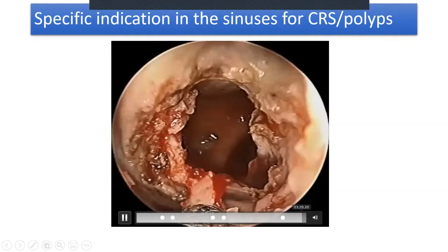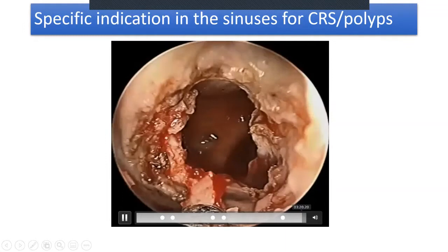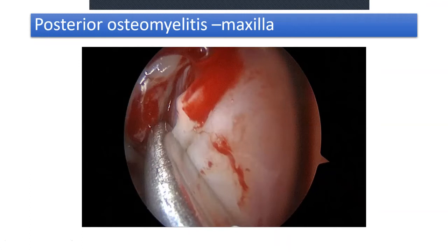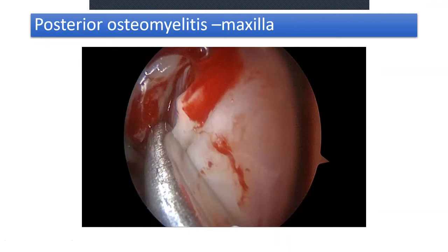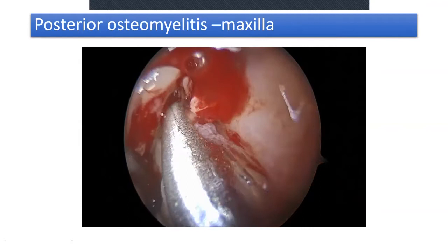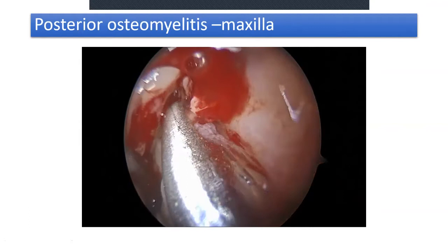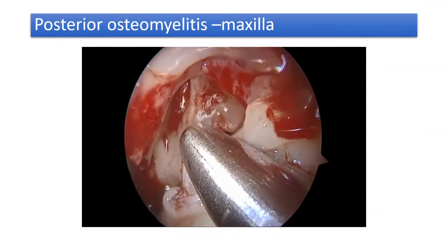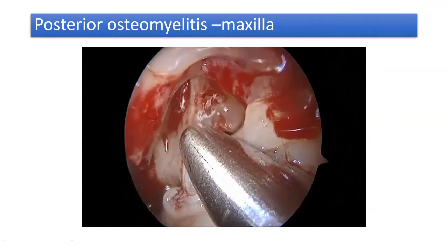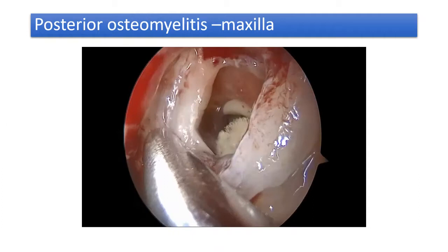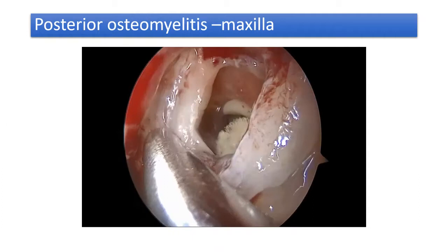Another indication: patients with dental problems presenting with osteomyelitis. A patient with malar pain — the dentist removed the tooth but the patient continued to have pain in the malar region. As the middle meatal antrostomy is widened with the Dip rider, you can visualize the mucosa inside the maxillary sinus and see fungal outgrowths.